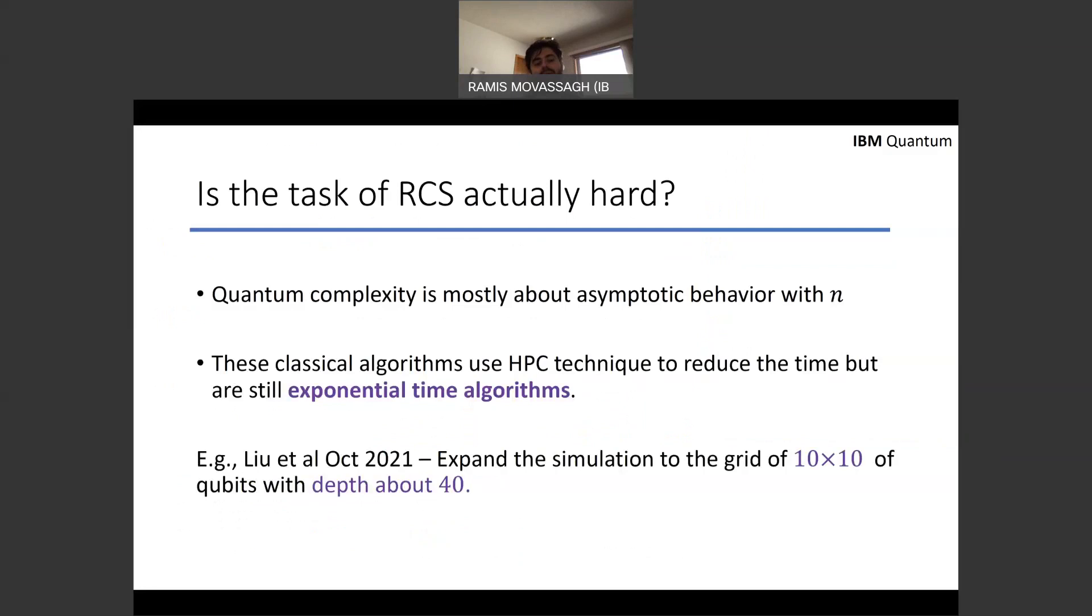Now, quantum complexity is mostly about asymptotic behavior, not like 53 or 45 or whatever. So you have to really see how things scale asymptotically. And most of these classical algorithms that use high-performance computing techniques are actually exponential time algorithms.